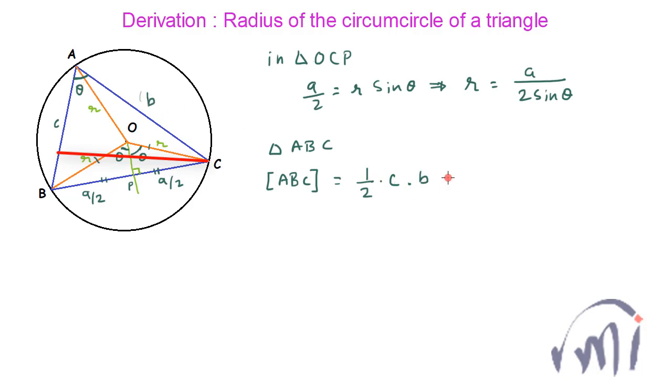So multiplied by B sin theta, so from here you can say sin theta is actually equal to 2 times the area of the triangle ABC divided by CB.